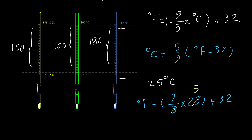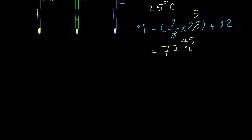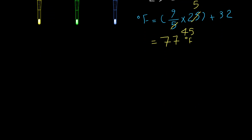Simplifying: 9/5 and 25 — we can simplify 5 and 25, giving 9 × 5 = 45, plus 32. The answer is 77°F. Let's do more examples: convert 100°C and −20°C to Fahrenheit.